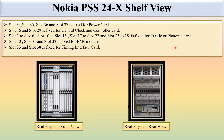Slots 30, 31, and 32 are fixed for the fan modules. Slots 33 and 38 are fixed for the timing interface card. We will see where the slot locations are in the front view and rear view in the next slides. Slot 39 is fixed for the multi-function card.